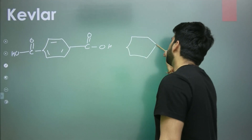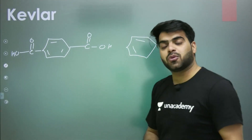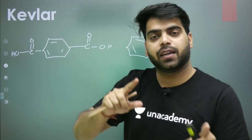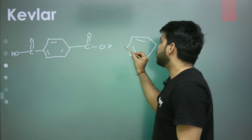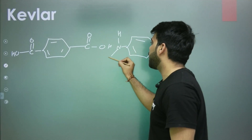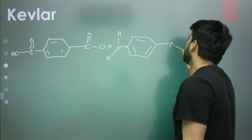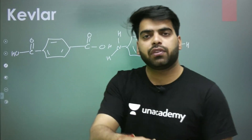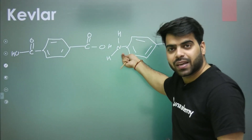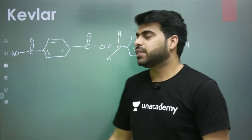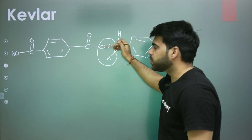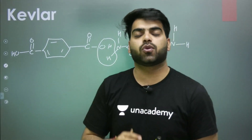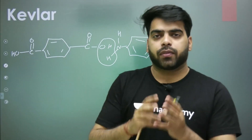Now if you have studied GOC well — just as I say rocket science also needs basic sciences — similarly, making bulletproof material also needs GOC. If I ask you, between the two amines — the one we studied earlier and the aromatic diamine we are using here — the aromatic amine is more basic. A long chain polymer gets formed, its tensile strength will be quite high, and it is used as bulletproof material.